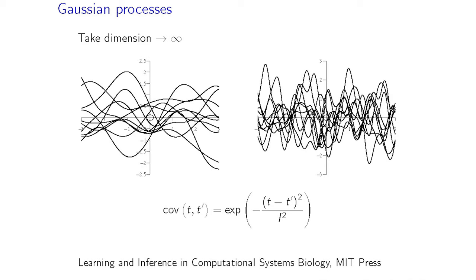Instead of having a covariance matrix, we now have a covariance function, which tells us what the correlation of points is depending on their distance. If these are time series, we call the x-axis t, so it's a distance and this is a correlation. This covariance function has a hyperparameter L, which is a length scale. If L is large, the functions don't cross zero so often. If L becomes small, they wiggle a lot. So this parameter of the covariance function gives us the properties of these functions.